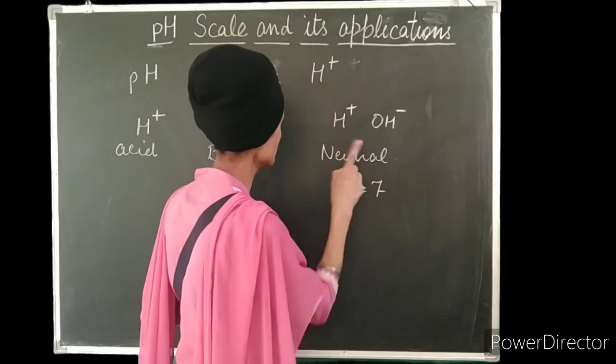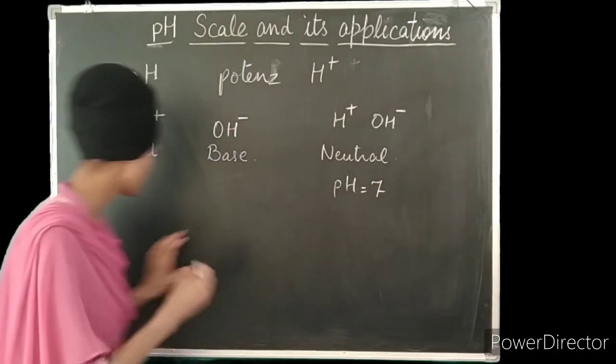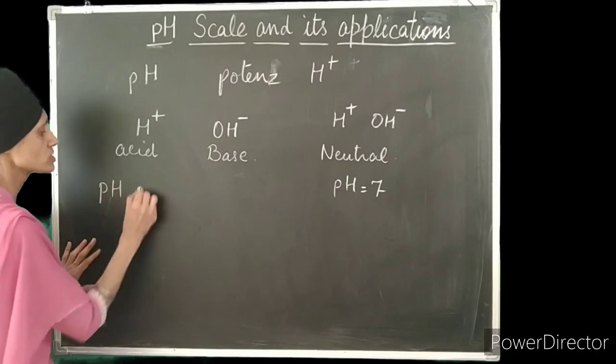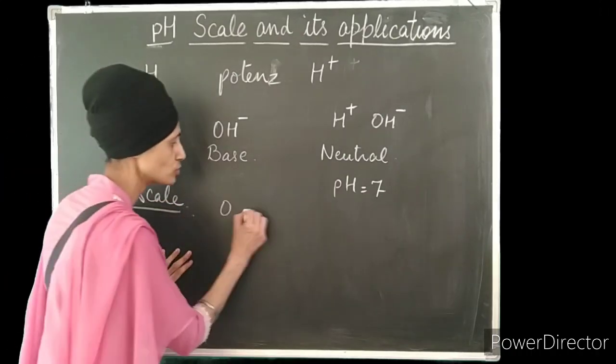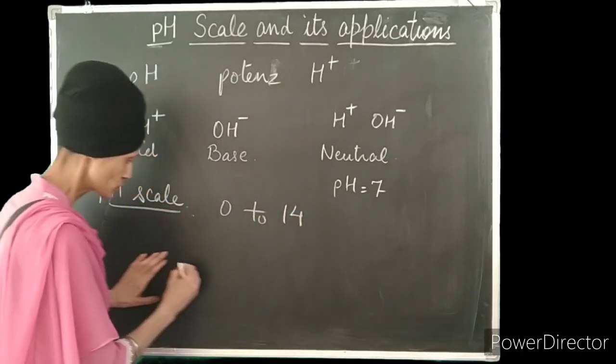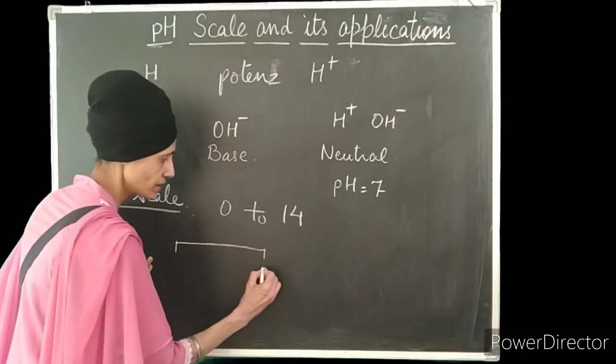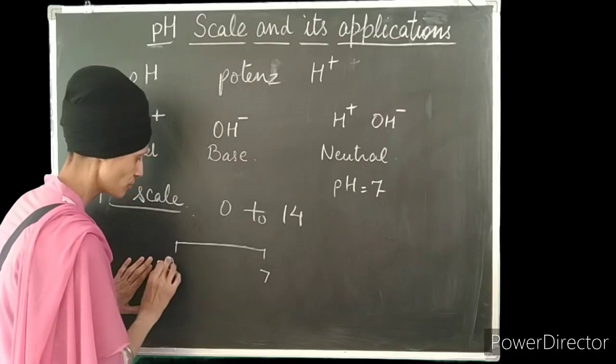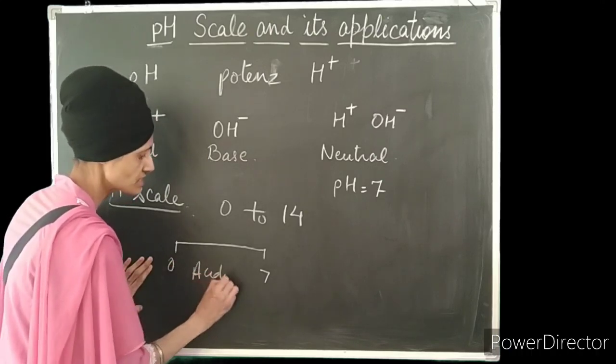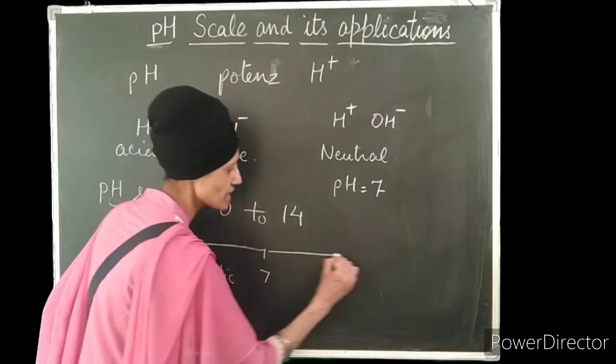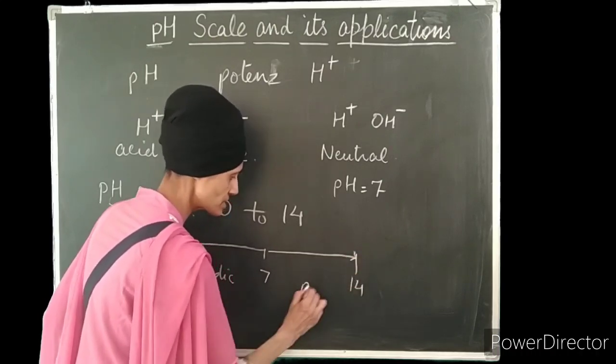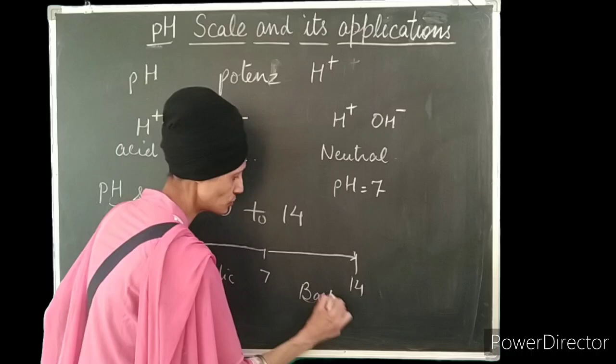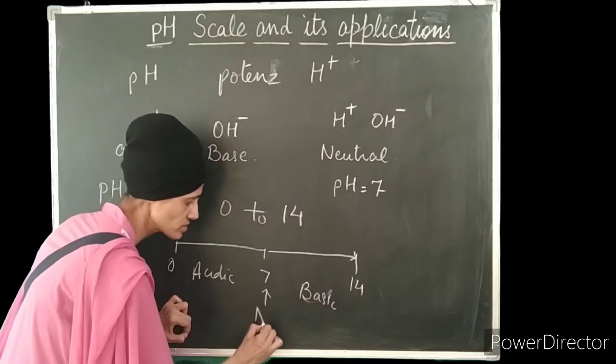This pH value is actually made by a scale which is called pH scale. The range of the pH scale varies from 0 to 14. So 0 to 7 is the range for the acidic solutions and from 7 to 14 is the range for the basic solutions. The neutral solutions have pH value 7.